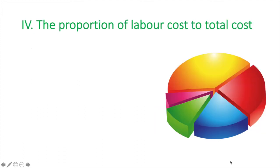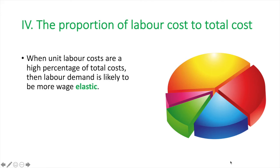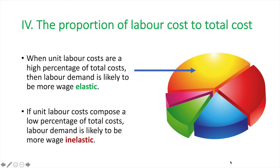Fourth is the proportion of labour cost to total cost. When unit labour costs are a high percentage of total costs, the labour demand is more wage elastic. An increase of wage rates would significantly impact the profitability of the firm and thus they would be very sensitive to wage increases. If unit labour costs compose a lower percentage of total costs, a firm is less likely to be sensitive to wage increases. In this case, an increase of wage rates would have a minimal impact on profitability and thus the firm would be less sensitive to wage increases.